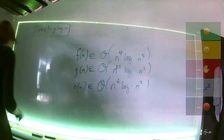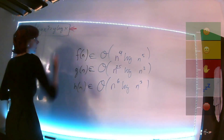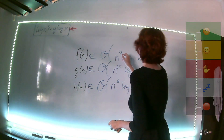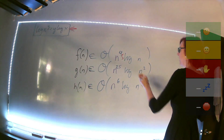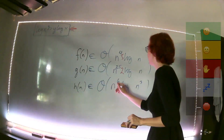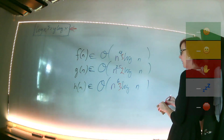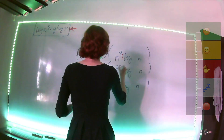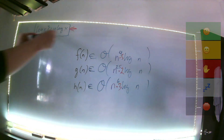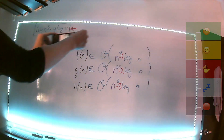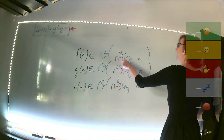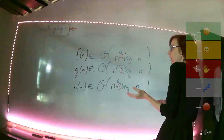Entra la última regla: logaritmo de n elevado a 5 es lo mismo que 5 veces el logaritmo de n. Logaritmo de n elevado a 2 es lo mismo que 2 veces logaritmo de n. Logaritmo de n elevado a 3 es lo mismo que 3 veces el logaritmo de n. Como traje la multiplicación acá, ahora es solo un múltiple constante, ya no es una potencia, entonces los vamos a quitar.